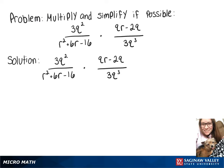In this video, we're going to multiply these expressions and simplify. So on top, we'll have 3q squared times qr minus 2q over 3q to the third times r squared plus 6r minus 16.